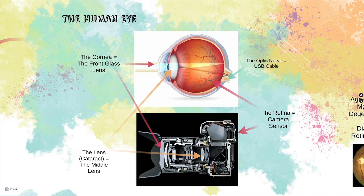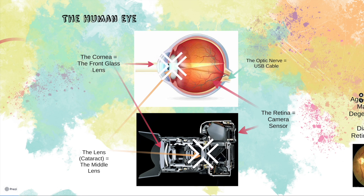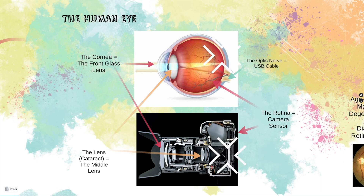The eye is rather complex, so let's try to simplify things using a camera as an analogy to capture the key structures of the human eye. The cornea is similar to the front glass lens in a camera. The inner glass lens of the camera is most similar to the lens of the human eye, which eventually becomes a cataract. The camera sensor is most similar to the retina, and the USB cable is most similar to the human optic nerve.